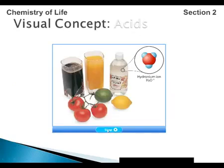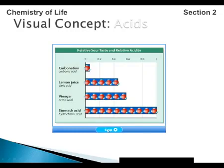Carbonated drinks, orange juice, vinegar, tomatoes, limes, and lemons all contain acids. Acids give these foods their sour flavor. Your taste buds respond to the level of hydronium ion in the food — the more acidic the food, the more hydronium ion present, and the more sour the food tastes.